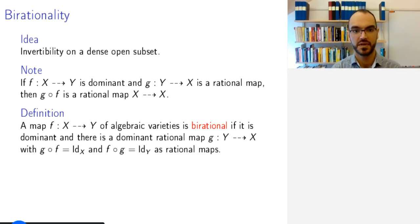we define a map from X to Y of algebraic varieties to be birational so that composing them in either order gives us the identity. But when I say gives us the identity, I mean it equals the identity where the equalities here are equalities of rational maps, so equalities on dense open subsets.